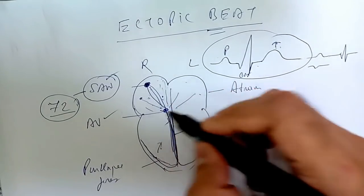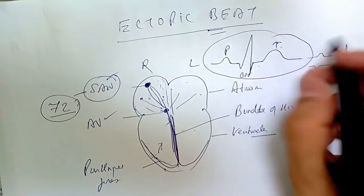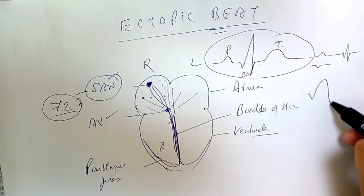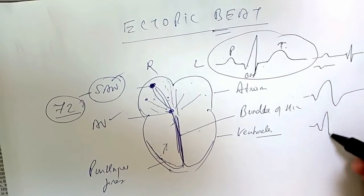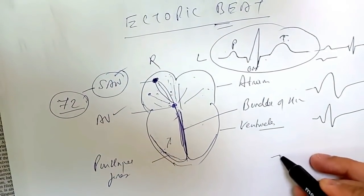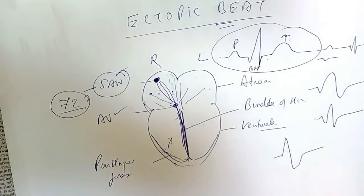If a ventricular ectopic beat occurs, then the QRS complex will be wide. The width will be wider than the normal QRS complex. So when the QRS complex is wide, we understand that it's ventricular in origin. Sometimes the shape will also be changed, the morphology will also be changed.